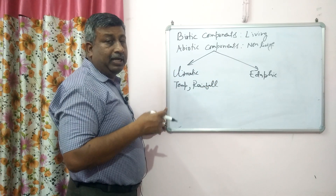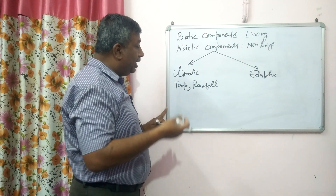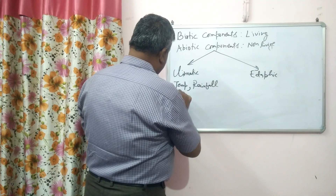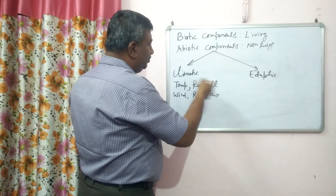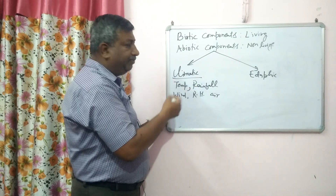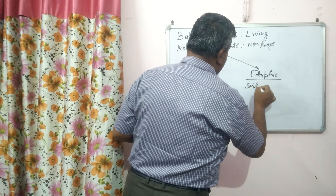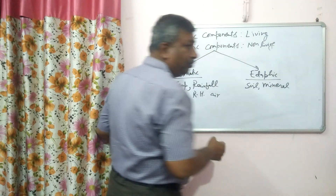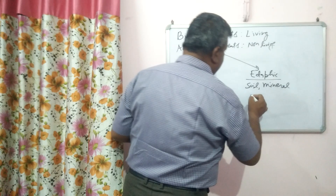Temperature and rainfall are very important. In areas where they are available in optimum amounts, there is huge biomass production — for example, tropical rainforest. Where temperature is high and rainfall is very low — for example, desert — biomass production is less. Wind, relative humidity, air, and CO2 are also climatic factors. Edaphic factors are related to land and soil — what is the soil type, whether it is fertile soil or less fertile, and what minerals are present in the soil responsible for fertility.